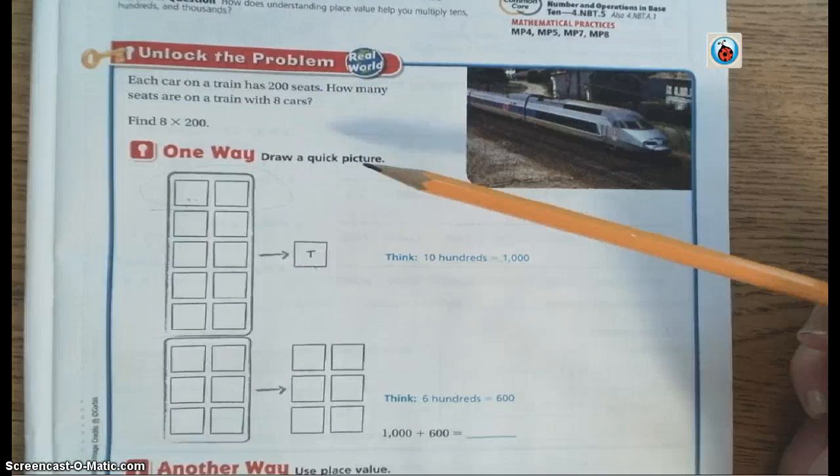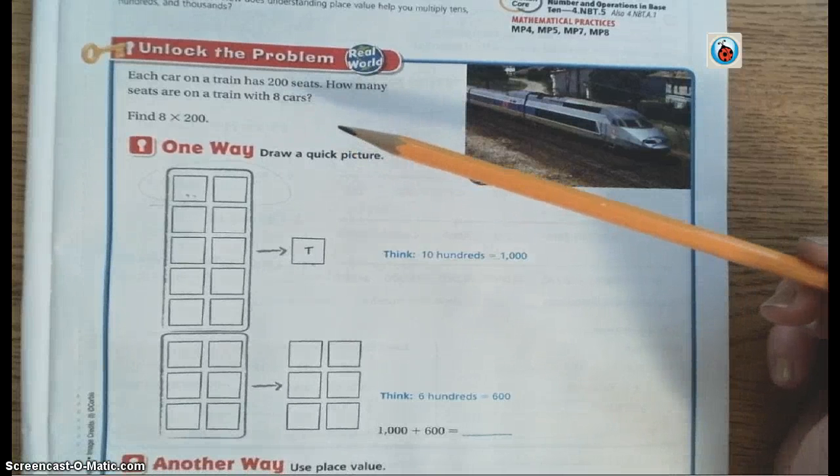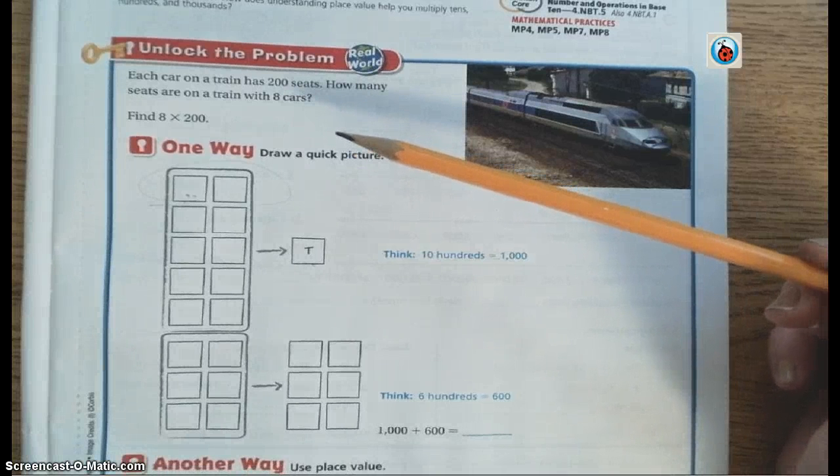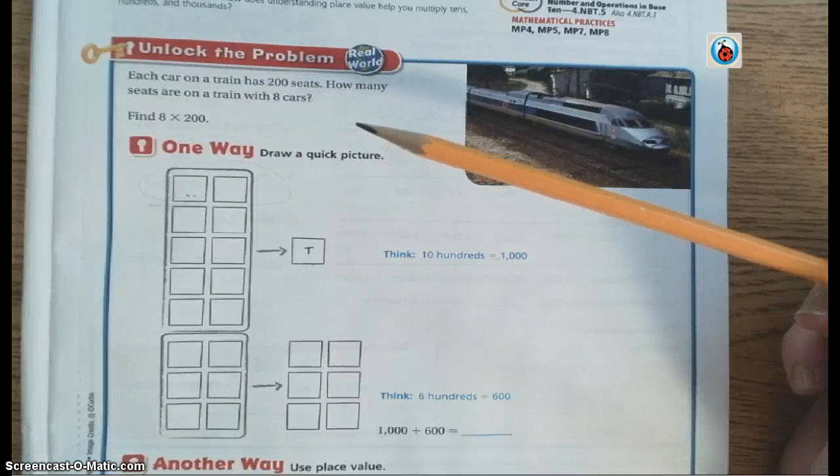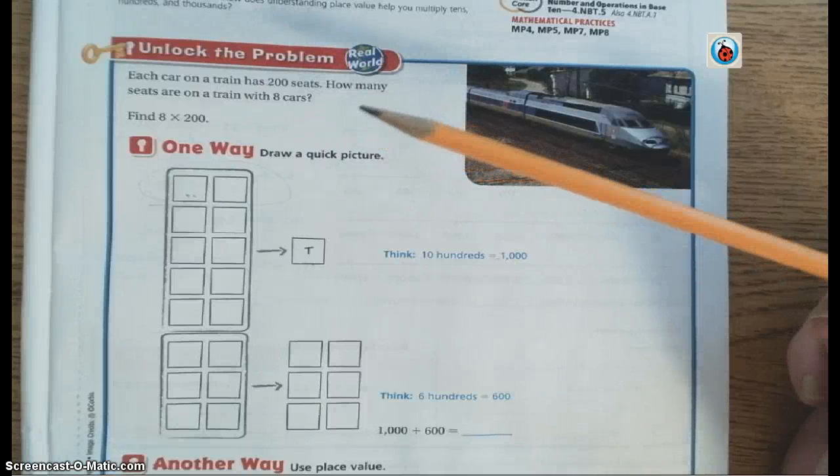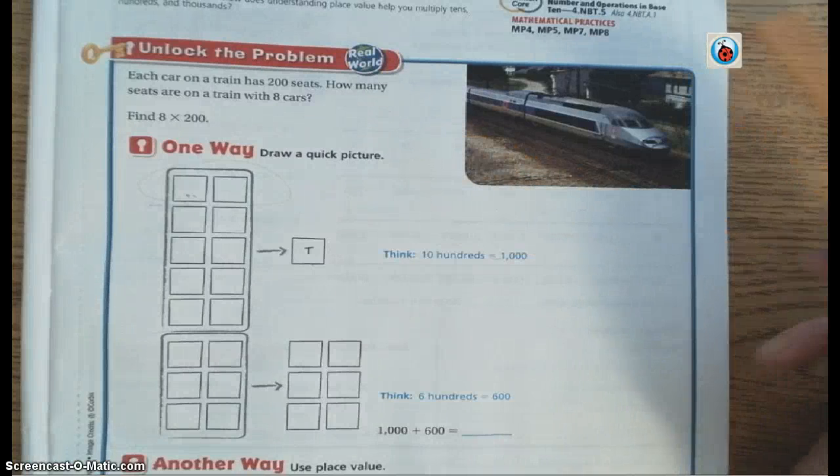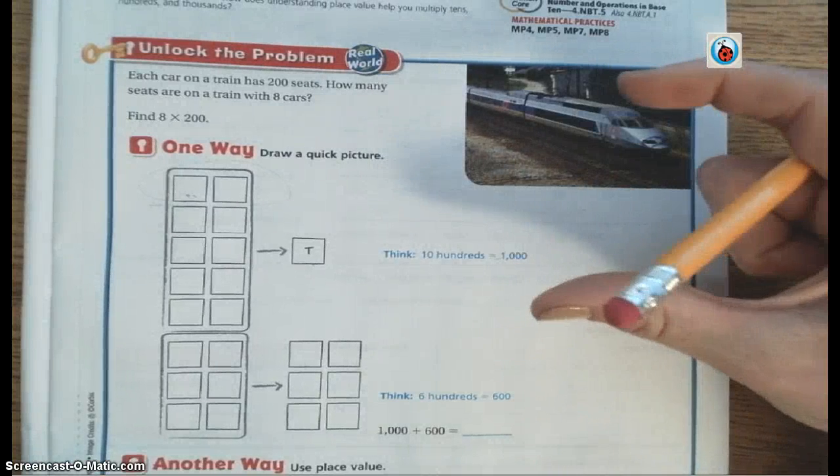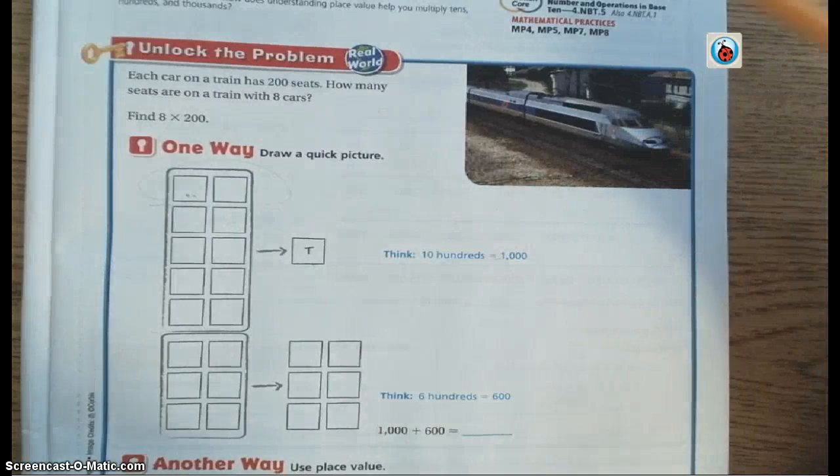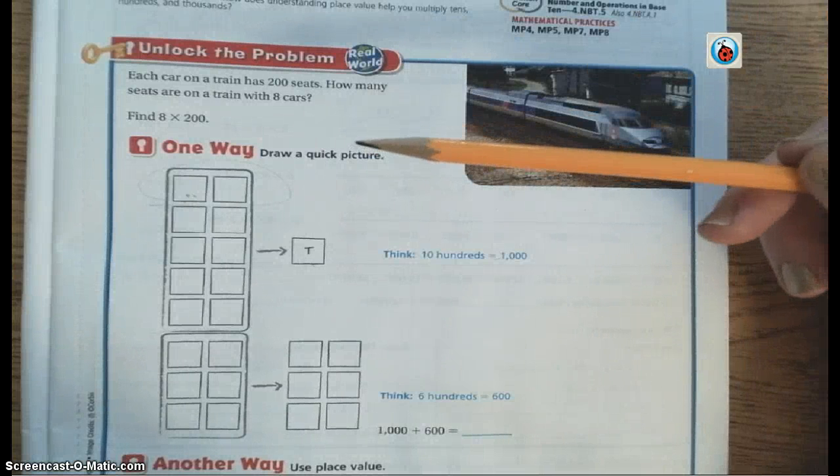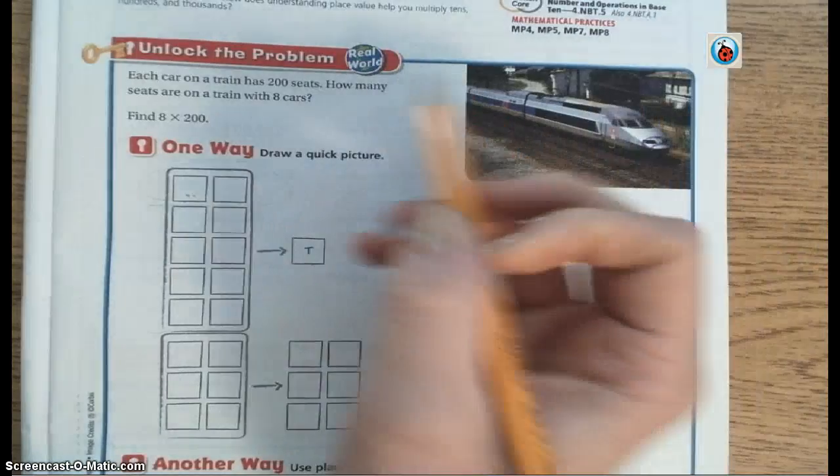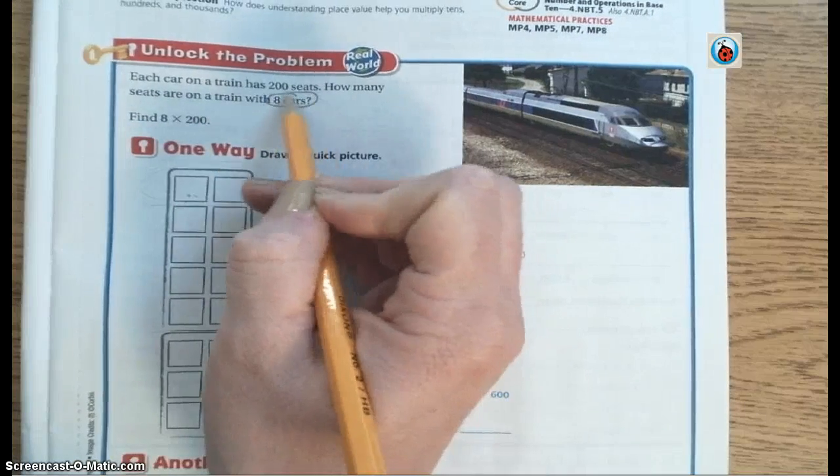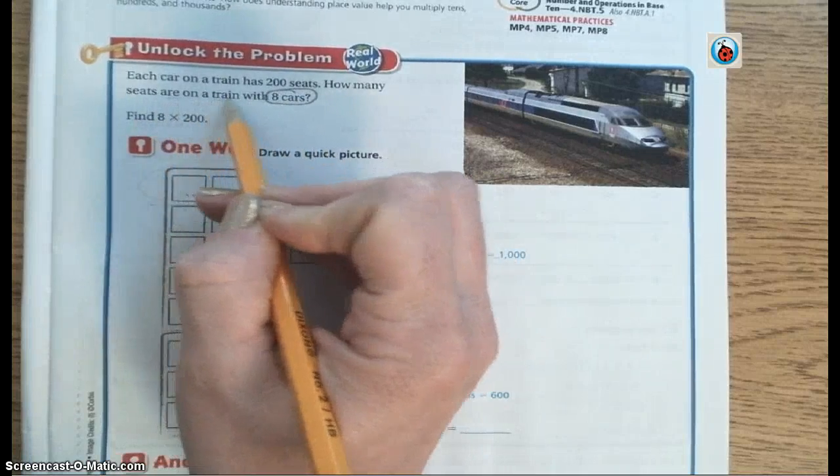Down here on the unlock the problem, first we're going to read the problem. Each car on a train has 200 seats. How many seats are on a train with eight cars? So we're going to think in our head. How many cars long is the train? It's important that you know that a car, when we're talking about trains, is one section of the train. So how many cars long is the train? Well, it's eight cars long.